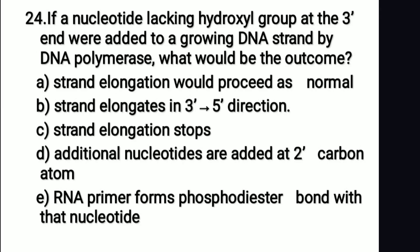If a nucleotide lacking a hydroxyl group at the 3' end were added to a growing DNA strand by DNA polymerase, what would be the outcome? The right answer is option C: strand elongation stops. Elongation occurs through formation of a 3'-5' phosphodiester bond. Since the 3' carbon lacks a hydroxyl group, phosphodiester bond formation cannot take place, and DNA synthesis stops.